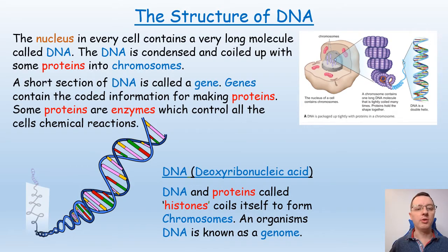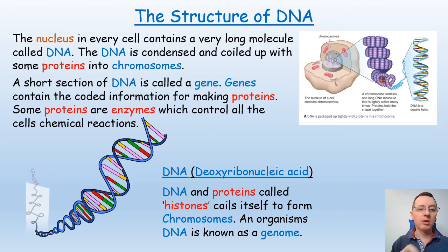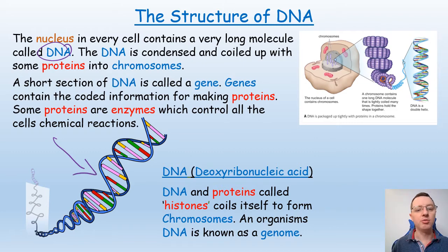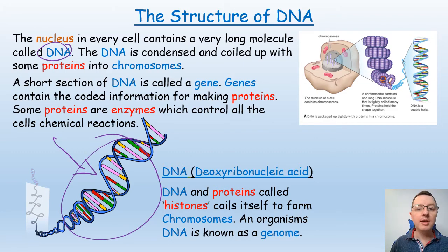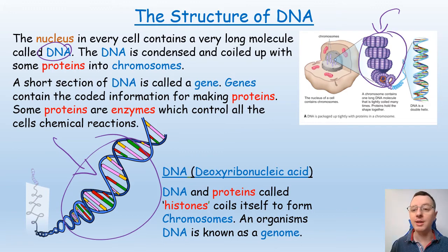Before we get to mitosis it's very important that you understand certain terminology that goes along with the nucleus of the cell. The nucleus of every cell contains a very long molecule called DNA, and you can see the double helix structure of the DNA here. DNA is then condensed and coiled up with some proteins into a form known as a chromosome, and you can see that coiling here to show you the chromosome.